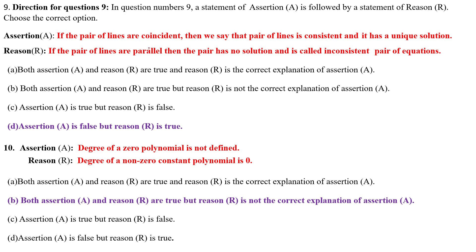Next question is the assertion and reasoning. My dear students, in this year CBSE introduced again assertion and reasoning questions. There will be 2 or 3 questions in the CBSE board examination. Assertion is if the pair of lines are coincident, then we say that pair of lines is consistent and it has unique solution. If there is unique solution, condition is consistent, but lines are not coincident. That means assertion is wrong. Let's see the reason. If the pair of lines are parallel, there has no solution. It is correct and it is called inconsistent, also correct. Assertion A is incorrect but reason R is true. Reason R is true because two lines are parallel, there is no solution, condition is inconsistent. Option D is the correct answer.